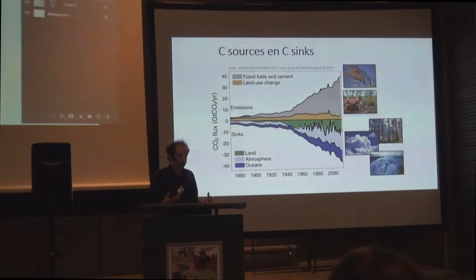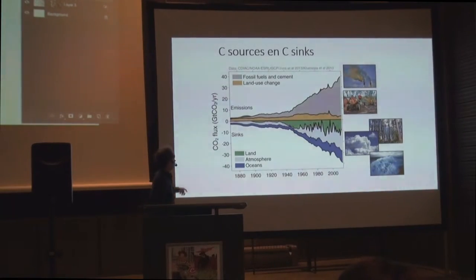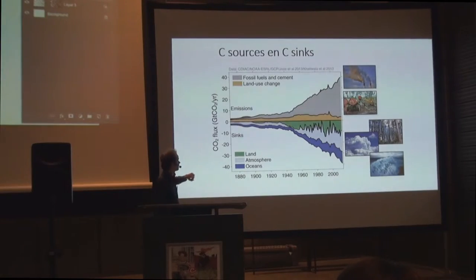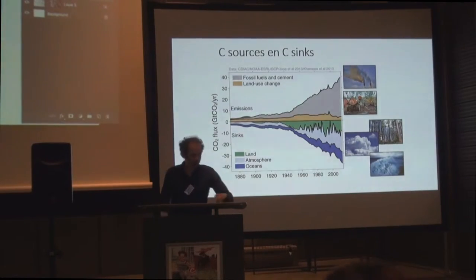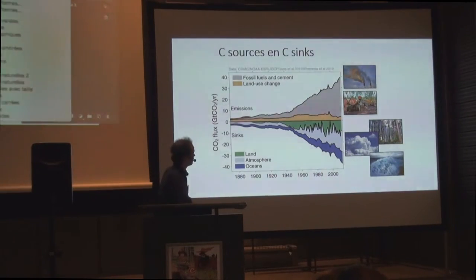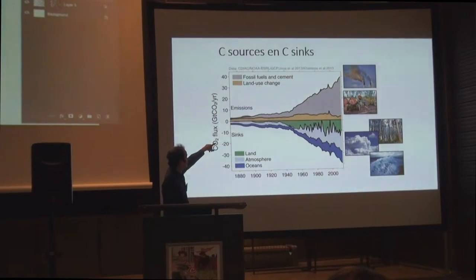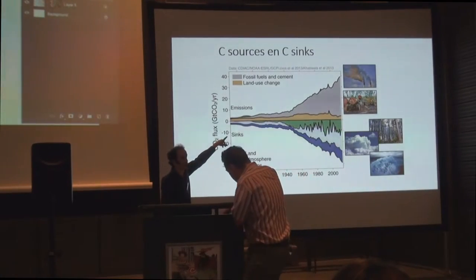And they are doing this better and better. The more CO2 we emit, the more plants take up CO2. This is illustrated here in the top panel — you see the emissions of CO2 over the last about 150 years. The brown area is emissions due to land use change: if we cut or burn forest, we emit CO2. And the grey area is the emission of CO2 due to fossil fuels, which has increased dramatically over the last 150 years.